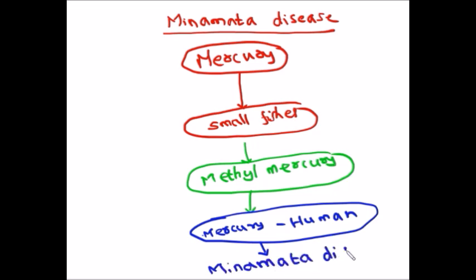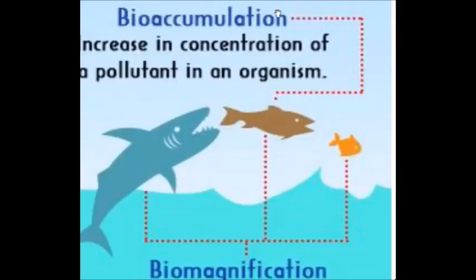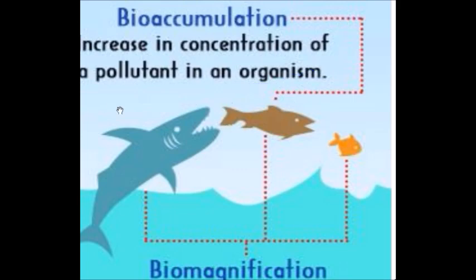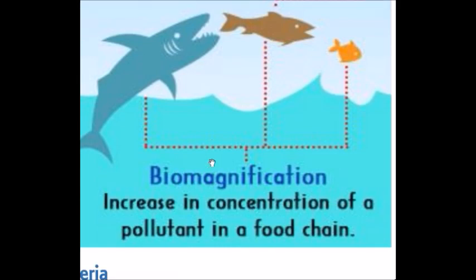The people living around Minamata got affected because of this disease, and that is why the disease was named Minamata disease. In this image you can understand the difference between Bioaccumulation and Biomagnification. Bioaccumulation is the increase in the concentration of pollutant in a single organism, whereas Biomagnification involves the food chain — showing an increase in the concentration of pollutant across many organisms in a food chain.